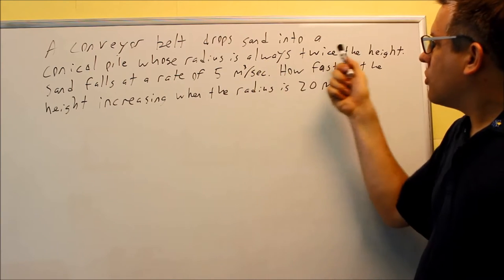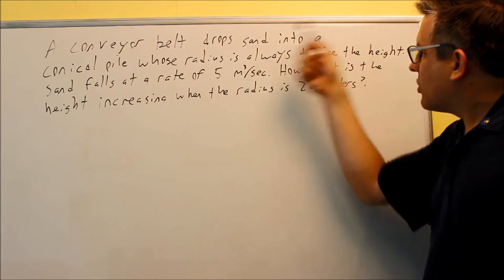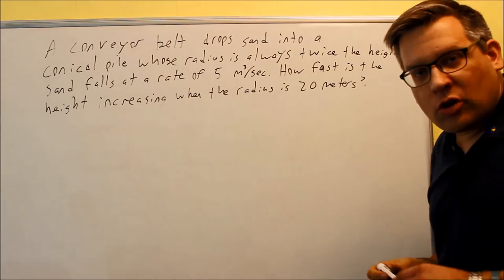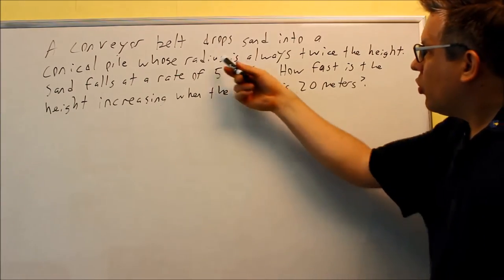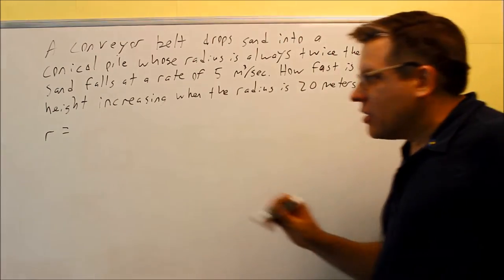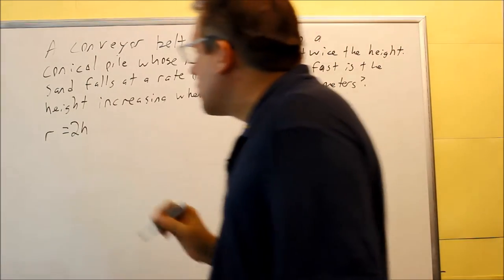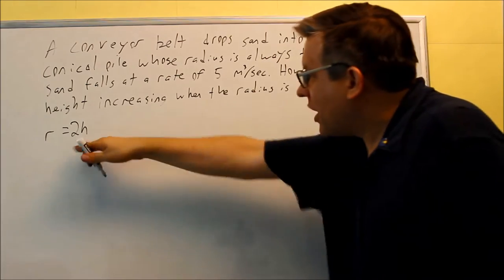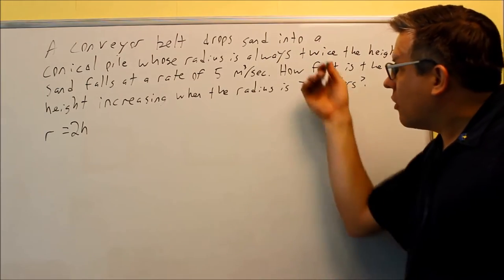Whose radius is always twice the height? That seems like it's pretty important, so I'm going to go ahead and write that down algebraically. Radius is, so r equals twice the height, so 2h. So I don't know where I'll use that. I'll come back to it later, but I want to at least just write it down to start with.